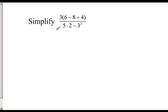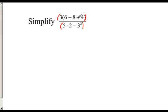As you already know, the first step of order of operations is grouping symbols, which includes parentheses as well as brackets or absolute value. What's interesting about this problem is that this big division bar creates grouping symbols — it groups the top section into its own group and the bottom section into its own group. That's a key trick: the division bar creates grouping symbols by itself, a top and a bottom.